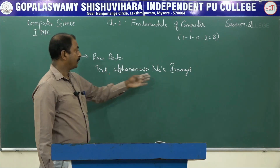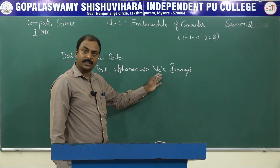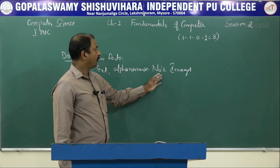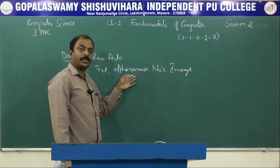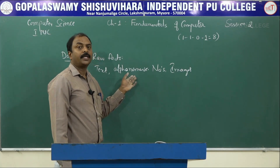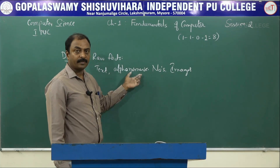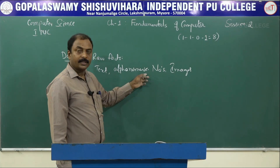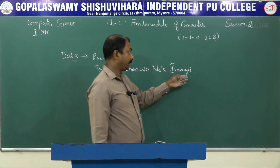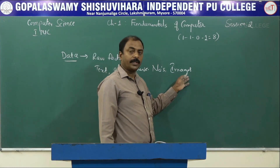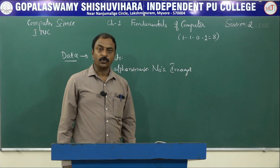And if you look at numbers, the marks obtained by a student — that is a number — it is also a form of data. Suppose you have a registration number of any student; it is a combination of text and numbers, that is called alphanumeric characters. And what about images? A very good example for this is your photo.